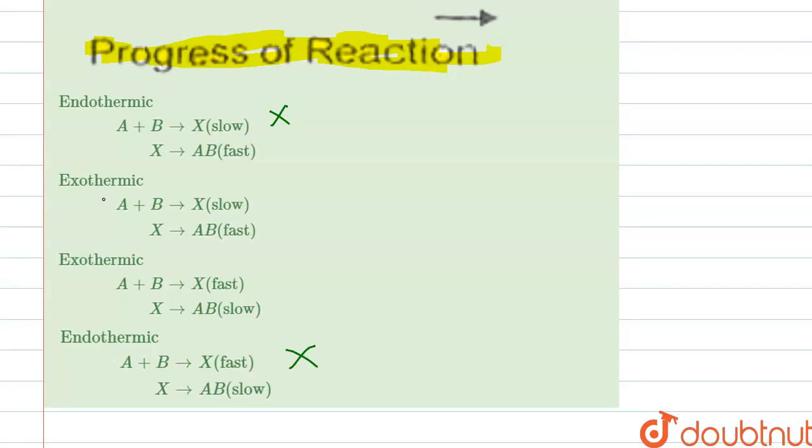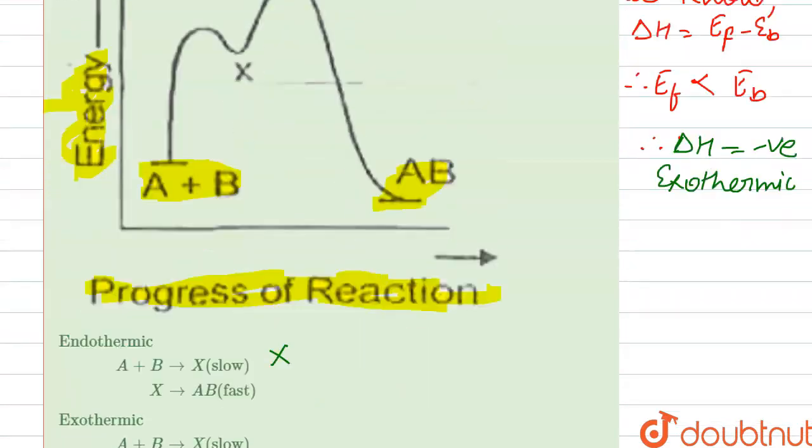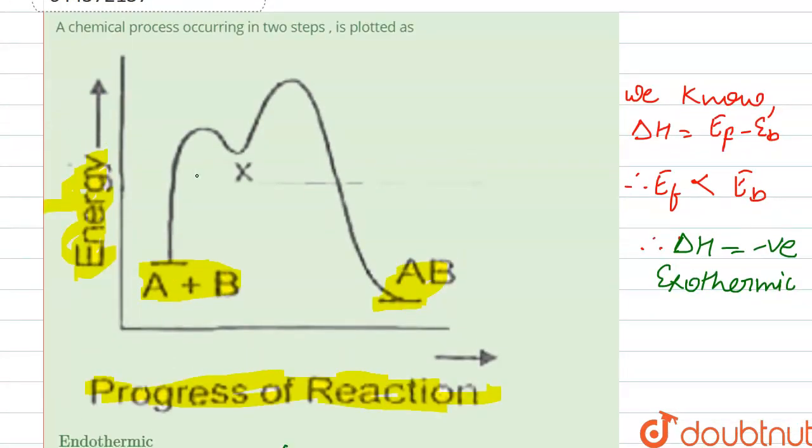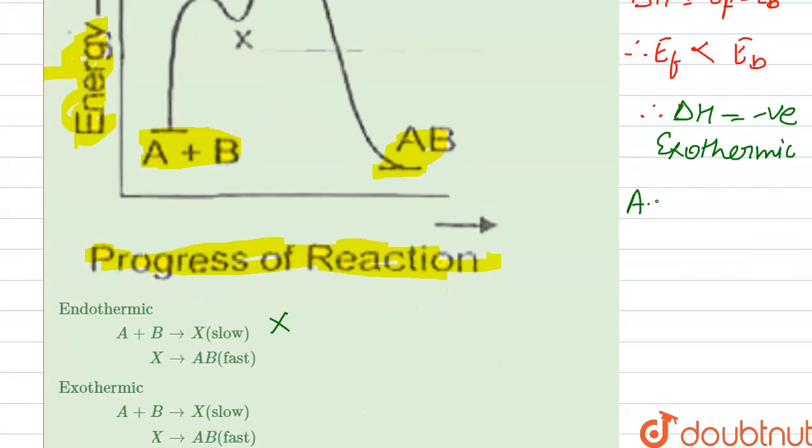Coming toward the next, we saw the graph. Since A plus B to X requires activation energy, A plus B to X requires activation energy, so we can say that it is a slow process.